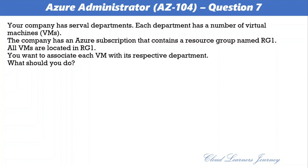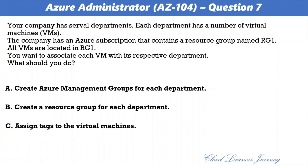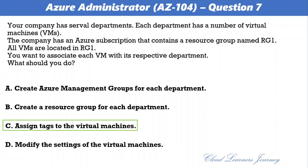Question number seven. Your company has several departments, each with virtual machines located in a resource group named RG1. You want to associate each VM with its respective department. The correct option is c) assign tags to the virtual machines. Tags are metadata elements applied to Azure resources — they are key-value pairs that help you identify resources based on settings relevant to your organization.